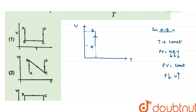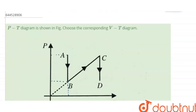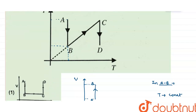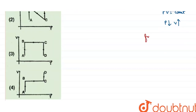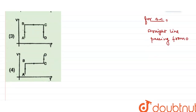Now for B to C: as you can see, B to C is a straight line passing through the origin. When the graph is a straight line through the origin, I can say that pressure is directly proportional to temperature. From the ideal gas equation, when pressure is directly proportional to temperature, that means volume is constant.